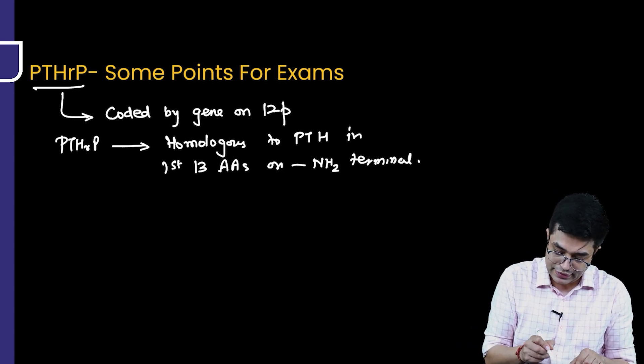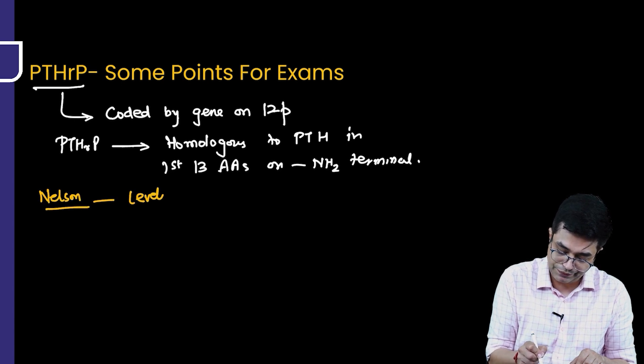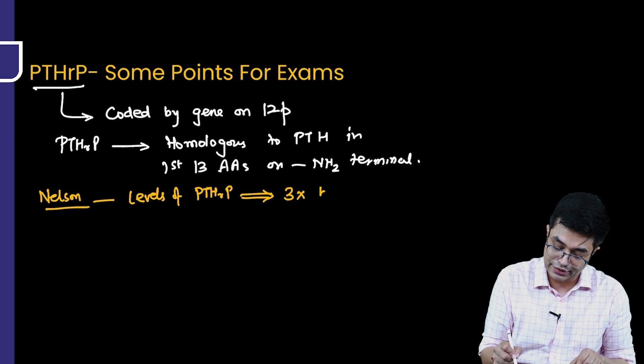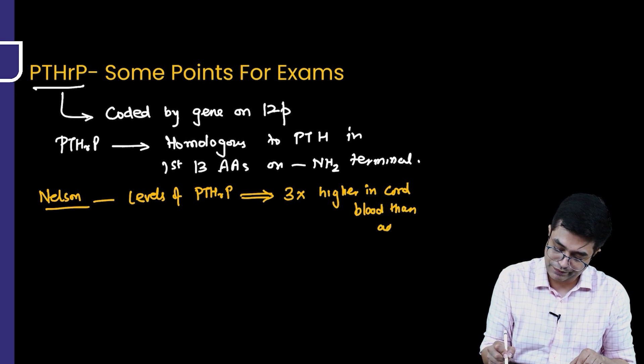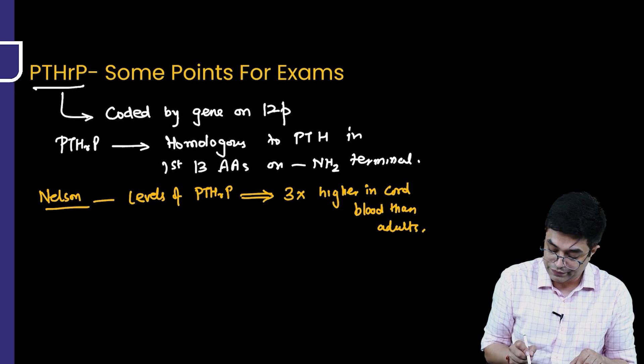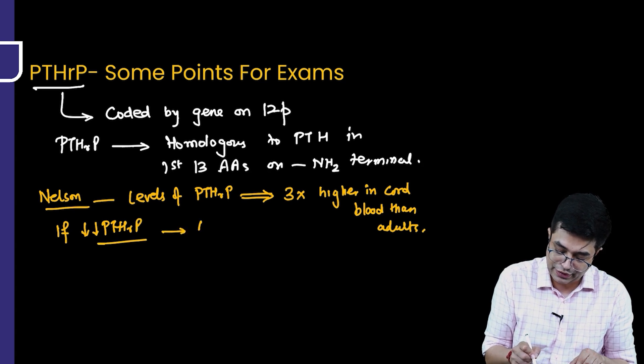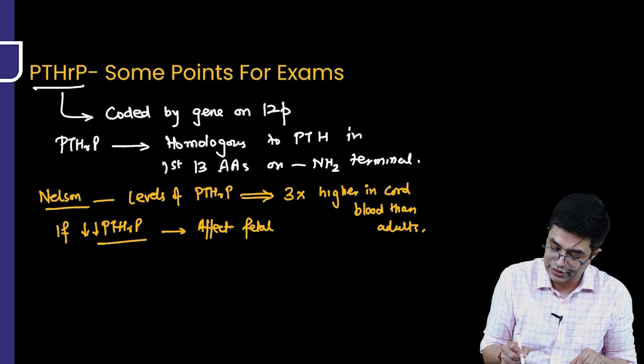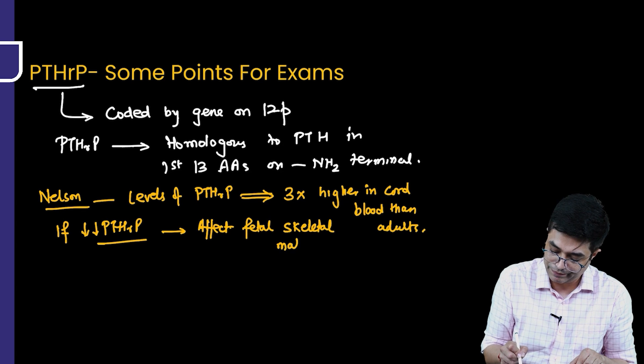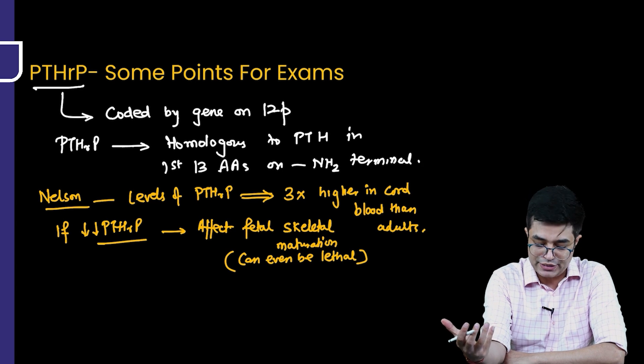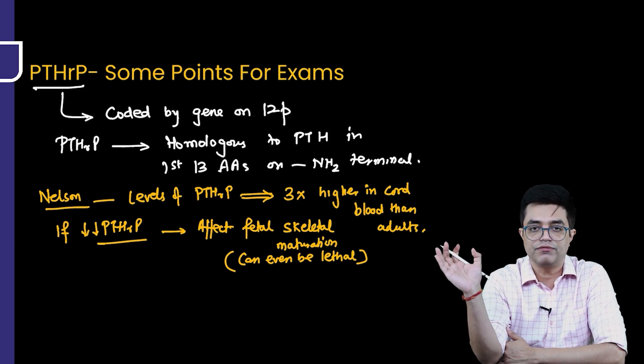Nelson says that the levels of PTHRP are three times higher in cord blood than adult patients. Also, Nelson says that if levels of PTHRP are very low, that can affect the fetal as well as neonatal skeletal maturation and sometimes can even be lethal also. Various types of rare skeletal deformities can be produced where there are genetic abnormalities causing absence of PTHRP.